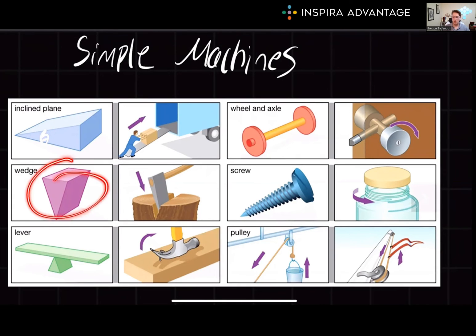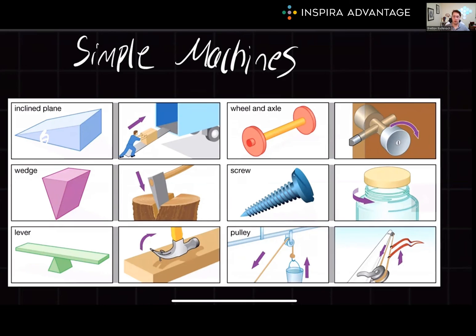Finally, the wedge — a triangular shaped object that can be used to separate, lift, or hold objects in place. When force is applied to the wide end of the wedge, force is distributed over a larger area, magnifying the force at the thin edge. And the screw: a cylinder with a helical groove or thread that wraps around its surface. When a rotational force is applied to the screw, it converts that rotational force into linear force along the axis of the screw.